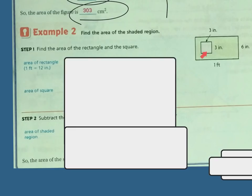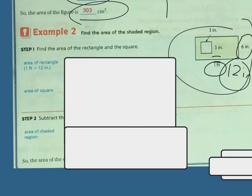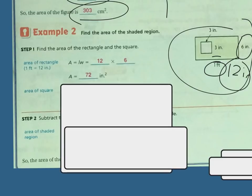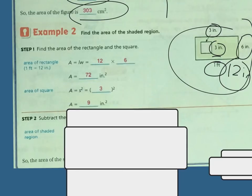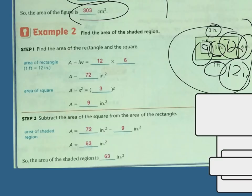Example two: find the area of the shaded region. First we find the area of the big square, which is 6 inches times 1 foot. On this one we have to convert, because you can't mix inches and feet — 1 foot is 12 inches. So the area of the big square is 6 times 12, which is 72 square inches. Then the area of the little square is 3 inches by 3 inches, so 3 times 3 is 9 square inches. To find the shaded area, subtract: 72 minus 9 equals 63 square inches.